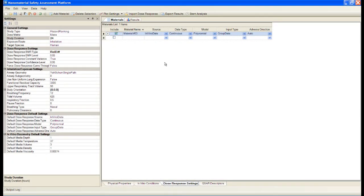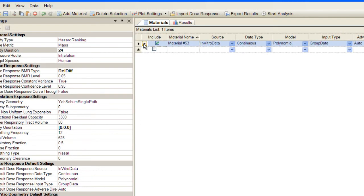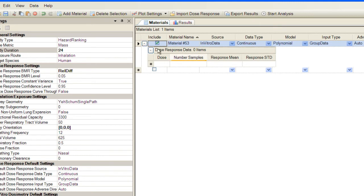Next, we need to specify our dose response data. To do this, click the plus sign to the left of the row in the materials list. And you'll see a second embedded spreadsheet open up. This is the spreadsheet that we'll enter our dose response data in.